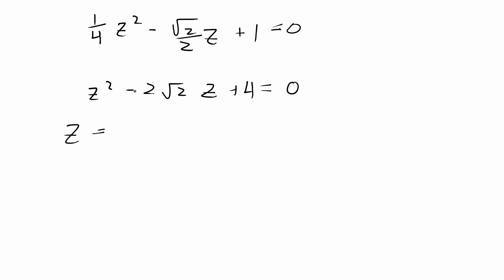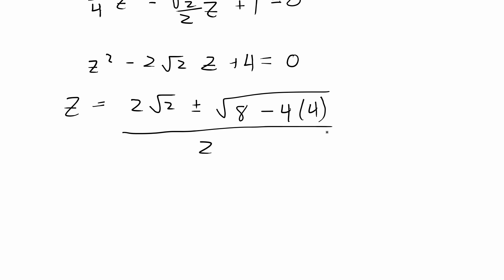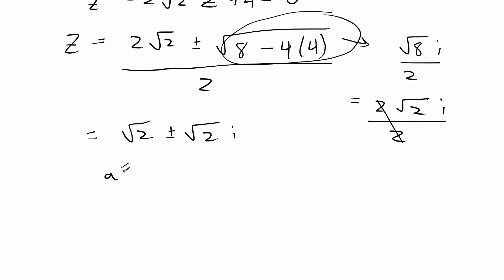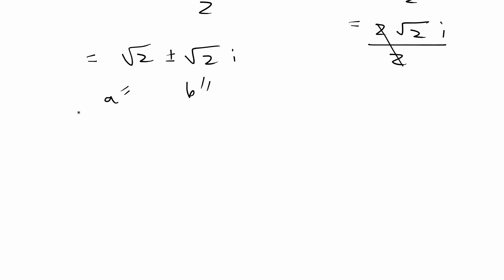Using the quadratic formula: z = [2√2 ± √(8 − 16)] / 2. Simplifying the discriminant gives √(−8) = 2√2·i, so dividing by 2 the roots are z = √2 ± √2·i. From this complex number, a = √2 and b = √2.